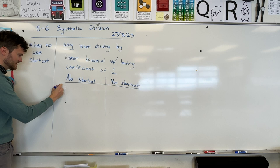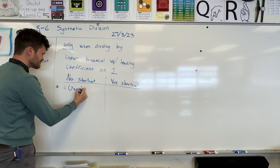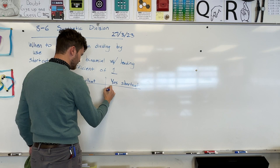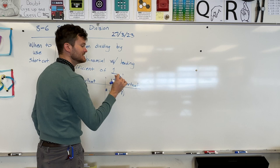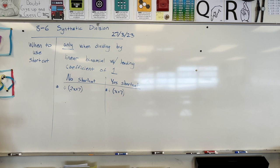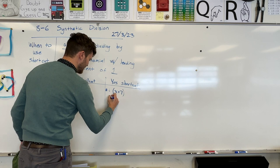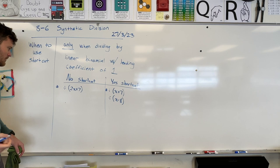If I divide some giant polynomial by 2x plus 7, that's not a shortcut — can't be a shortcut. But if I divide a giant polynomial by something like x plus 7, you're ready to go. You can only do the shortcut when it's x plus or minus something — when it's linear. So I could also divide by something like x minus 8, and that would also be a shortcut.